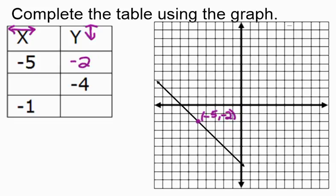Next I want to fill in the middle section, looking for where the y-coordinate would be negative four. Since y is our vertical movement, I start at the origin and move down one, two, three, four spaces. Anywhere along this horizontal line is where I want the function to cross — right here. The x-coordinate is our horizontal movement, and it's one, two, three spaces to the left, so left is negative, making it negative three.